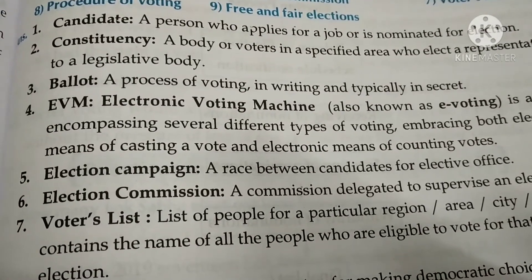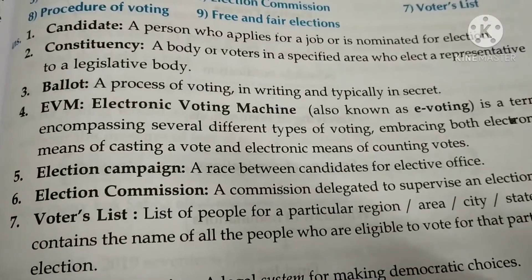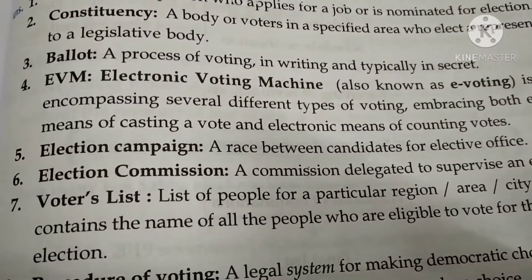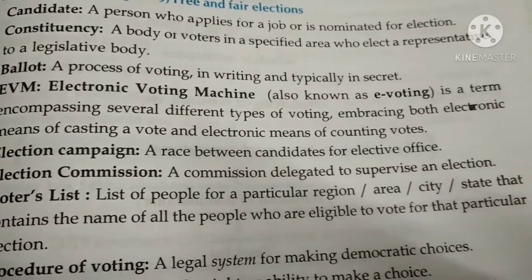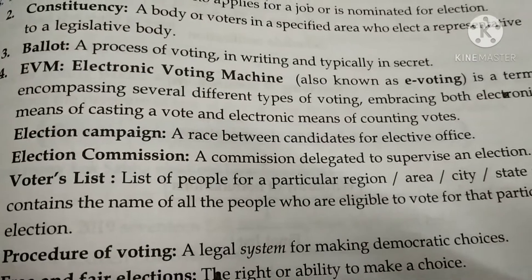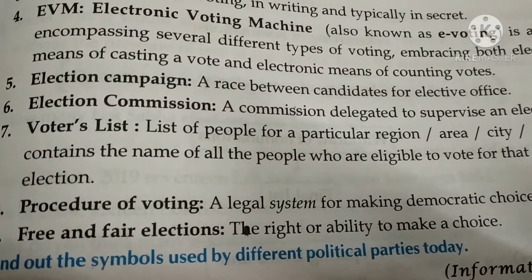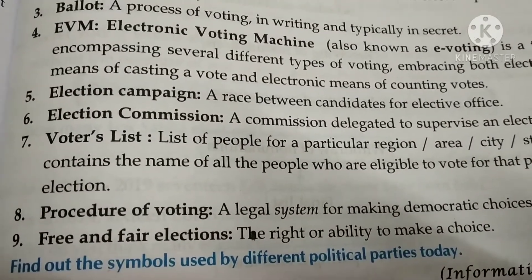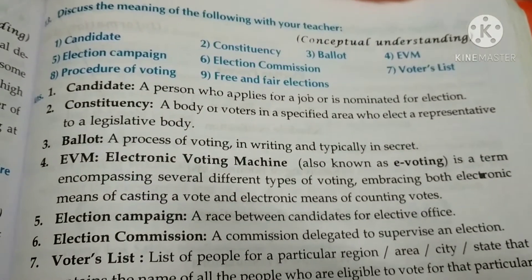Election campaign is a race between candidates for elective office. Election commission is a commission delegated to supervise an election. Voter list is a list of people for a particular region, area, or state that contains the names of all people who are eligible to vote in particular elections. The process of voting is a legal system of making democratic choice, including free and fair election — the right or ability to make a choice. These are some meanings of the words given in the textbook.